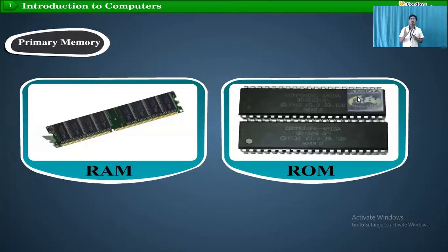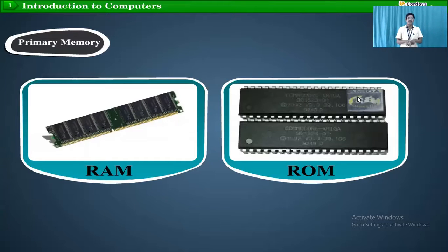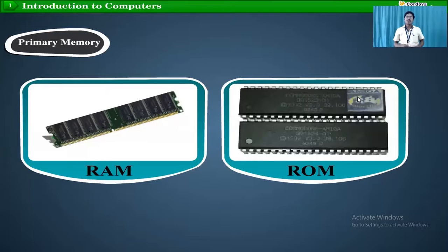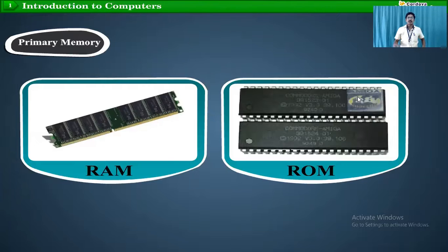Any photo you want to see, double-click on that photo which is available on the hard disk — it will come first into the RAM and then from RAM it will execute and display on the monitor. In ROM, the company already writes that data and it is stored permanently on that ROM.